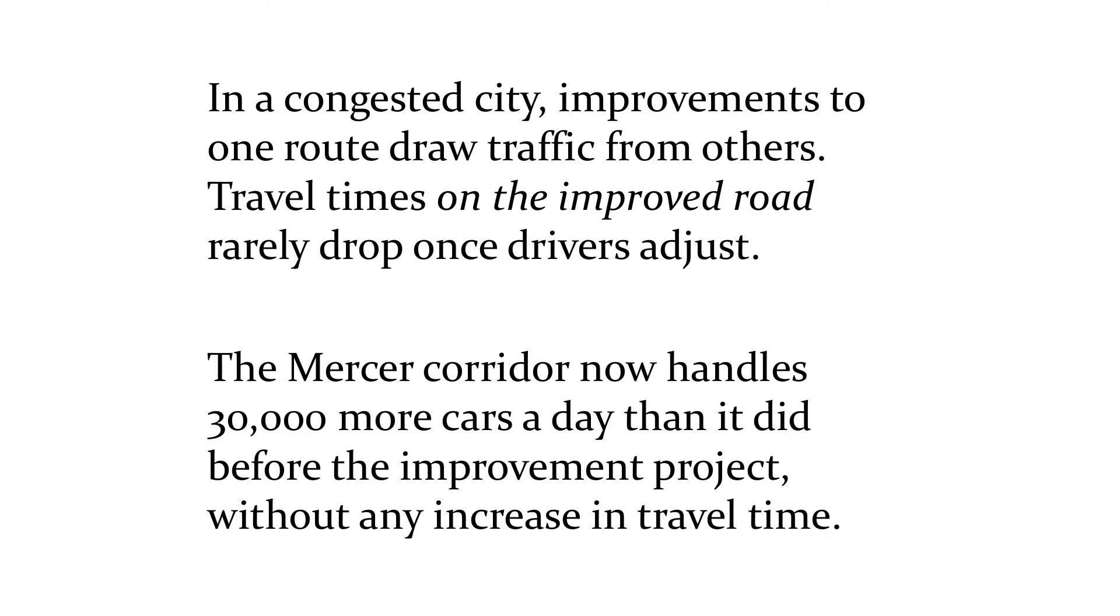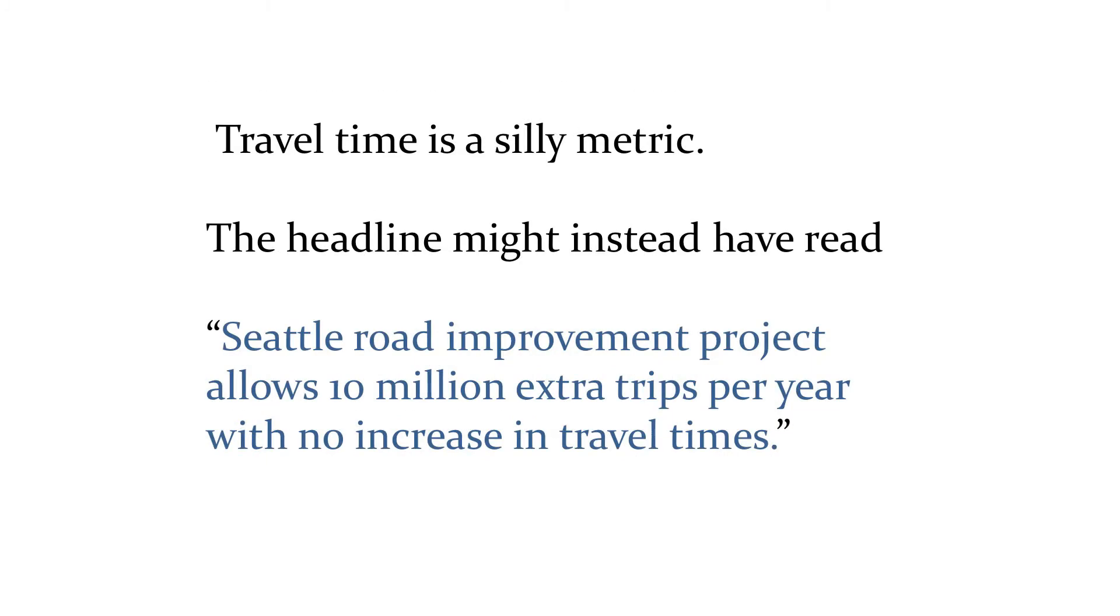The changes you make to Mercer Street are actually going to affect travel times all over the city, not just along Mercer Street. And we expect things to go back to something like equilibrium in terms of travel times. What you might want to look at instead is the fact that the Mercer corridor is now handling 30,000 more cars a day than it did before the project without taking any longer. So you could have written a headline that says, travel time is this silly metric. Your headline might have said, Seattle Road Improvement Project allows 10 million extra trips per year with no increase in travel times. That would tell a very different story.